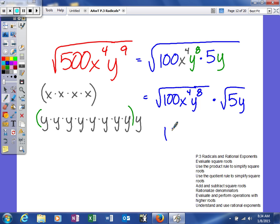we will get 10x squared. Again, take the index and divide it into the exponent. 2 will go into 4 two times. So we get that. And there'll be y. 2 will go into 8 four times. Times the square root of 5y. So that's simplifying a radical.